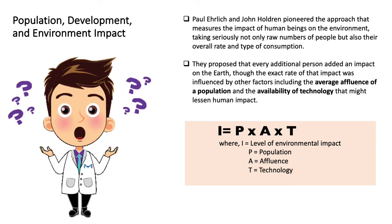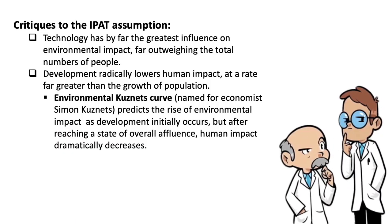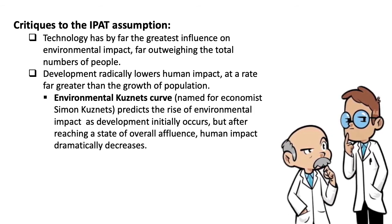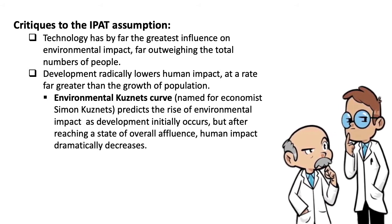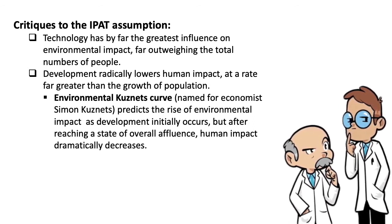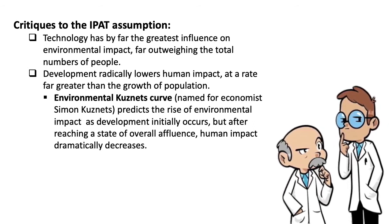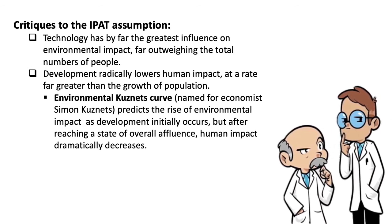This formulation certainly makes the relationship between population and environmental degradation even more complicated than Malthus did. Ehrlich explains that population requires the most immediate attention precisely because population is the most difficult and slowest to yield among the components of environmental deterioration. However, there are also critics to this assumption. Barry Commoner argued that technology has by far the greatest influence on environmental impact, far outweighing the total number of people, specifically citing the petrochemical-based economy, pesticides, fossil fuels, and a range of modern developments that increase individual impact enormously.